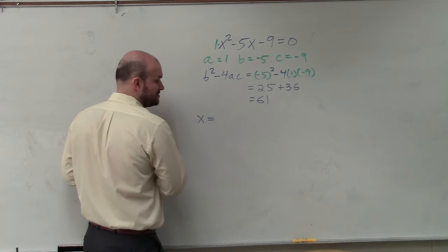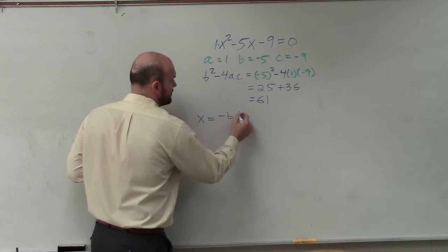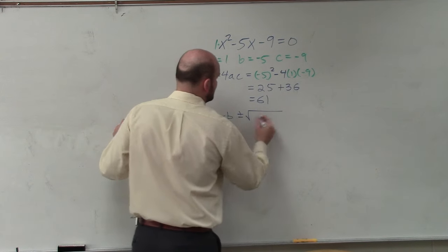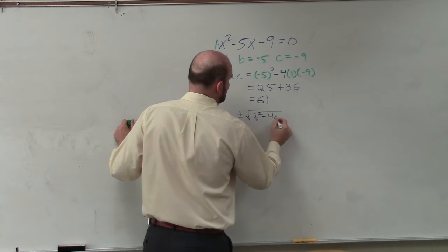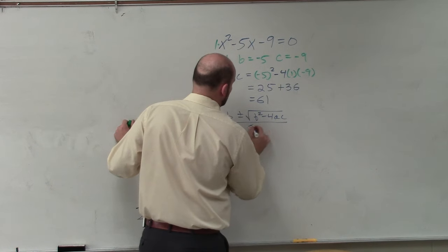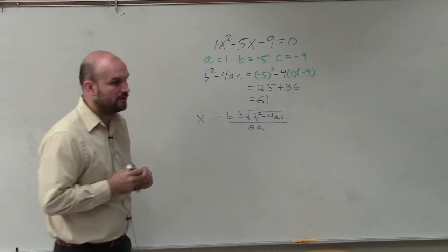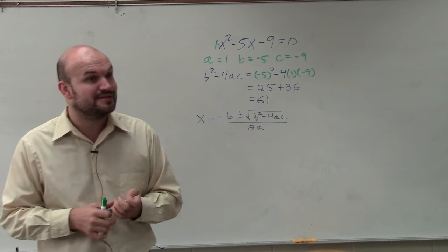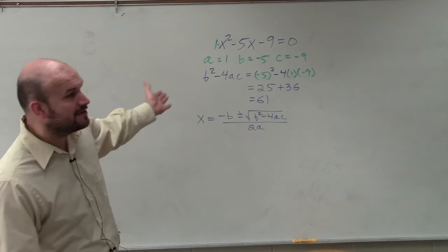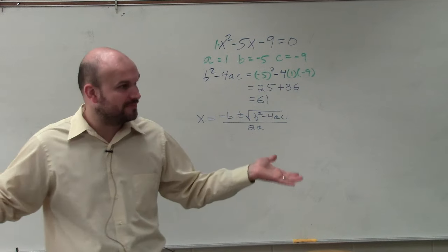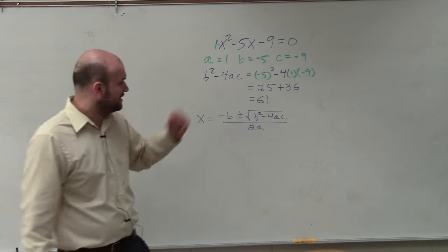So to find the solutions, remember, x equals is going to be our solutions. Opposite of b, plus or minus, square root of b squared minus 4 times a times c, all over 2 times a. That's the quadratic formula. We need to know it. We're not going to sing a song to remember it. You just need to make sure you memorize it. Write it down in the mirror in your bathroom and keep on saying it over and over, and you guys will be good.